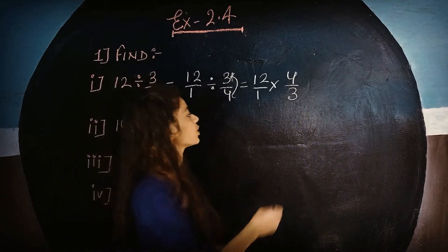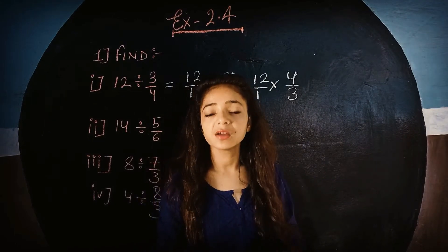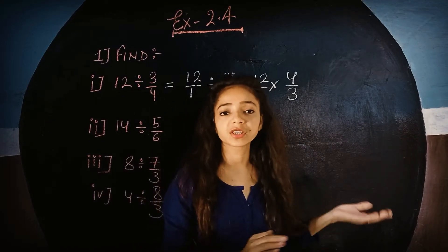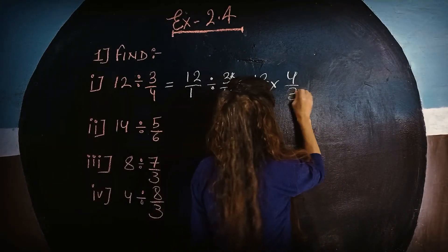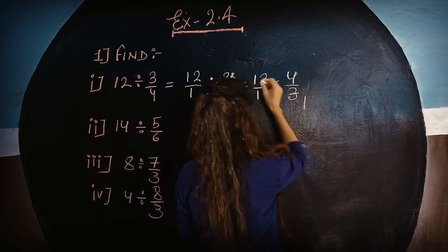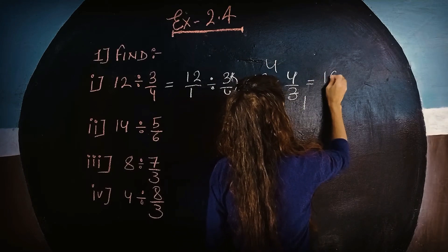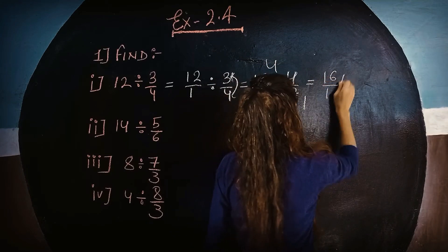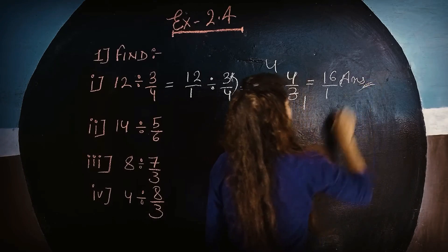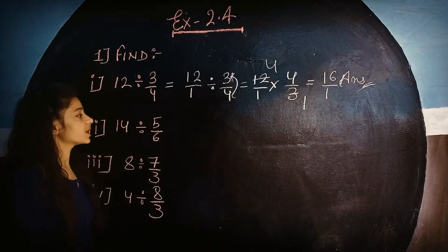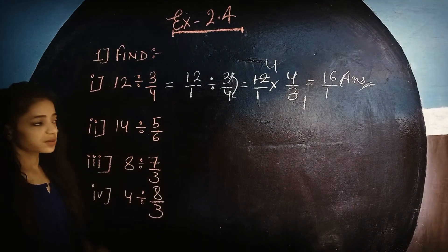You can see that the fractions on the simple side are multiplied — we reduce and remove. This gives us 3×4=12 on top and 4×4=16 on bottom, so 16 upon 1. This is the answer of question number 1, first part.